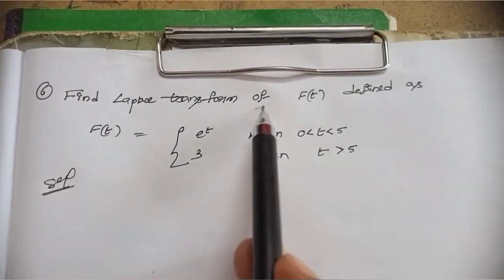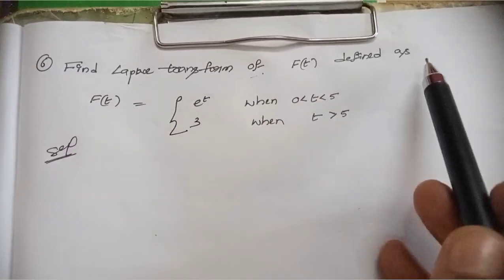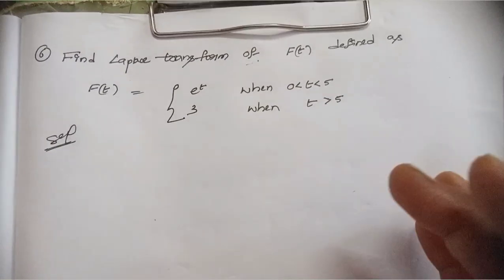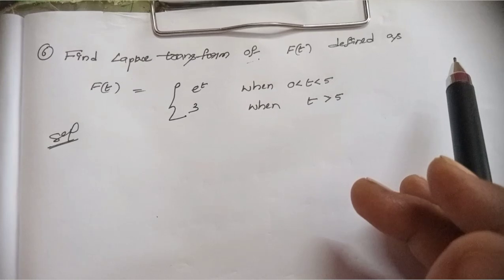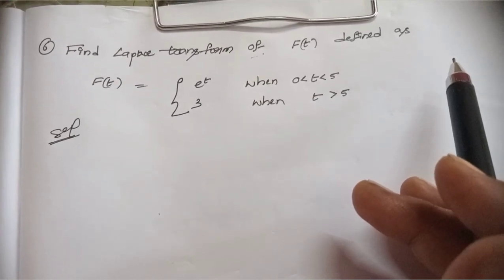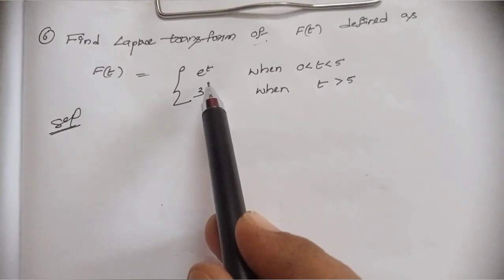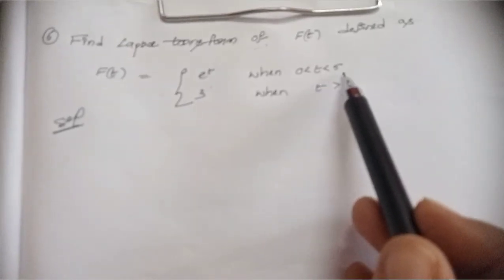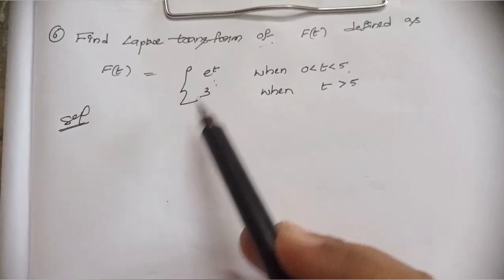Find the Laplace transformation of f(t), defined as: f(t) = e^t when 0 < t < 5.